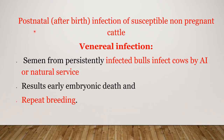In the first situation — postnatal infection of susceptible non-pregnant cattle — we have seen acute infection, immunosuppression, and now the third part: venereal infection. Semen from a persistently infected bull, during breeding either by artificial insemination or natural service, can infect the cow. If the cow becomes pregnant, there is early embryonic death and there may be repeat breeding.